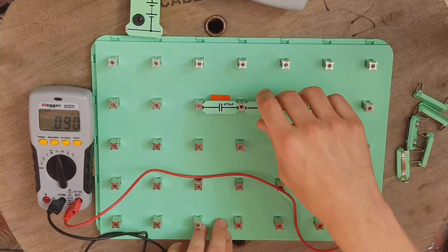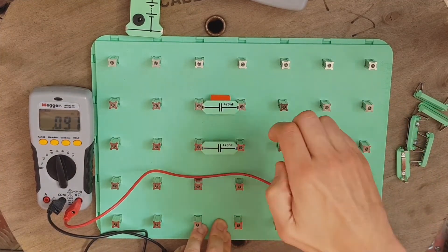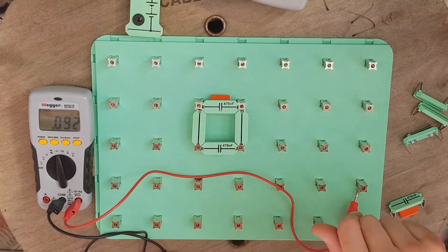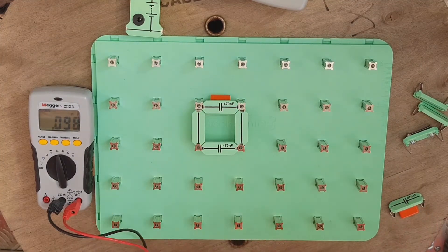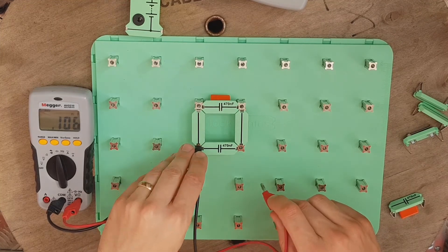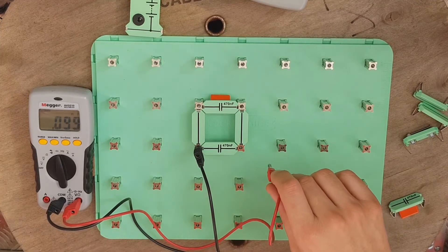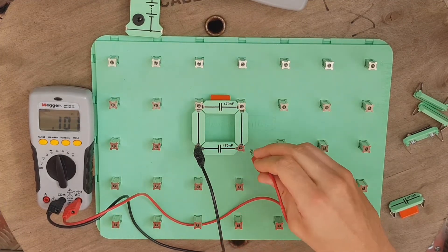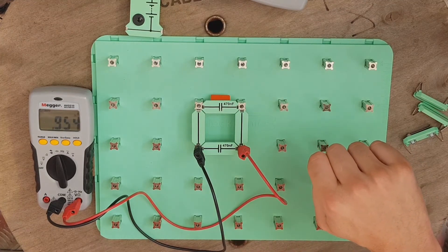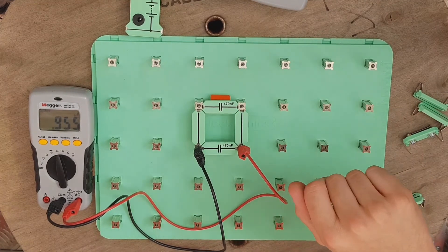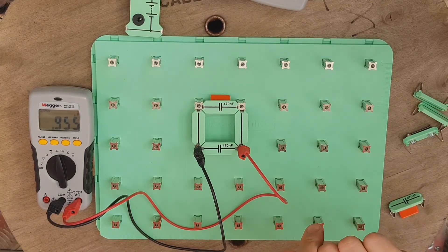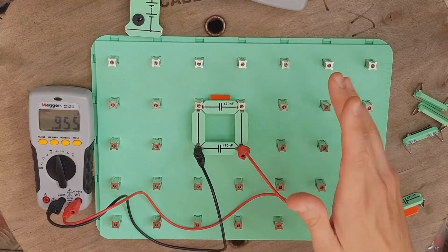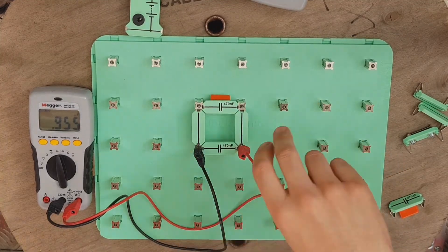Now let's connect our capacitors in a slightly different fashion. We've got 470 and 470. How have I got these connected now? In parallel with each other. If I measure from one side to the other, what value do you think we'll get? Double? Let's find out. We've come out with 0.955 microfarads, which is 955 nanofarads. Is that approximately double? Absolutely spot on.